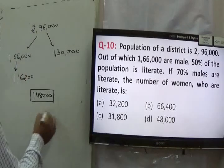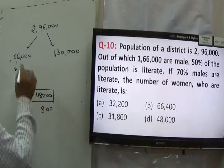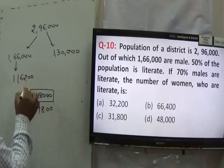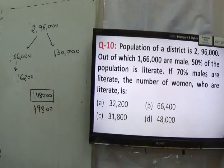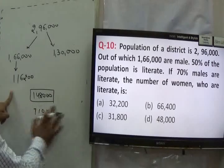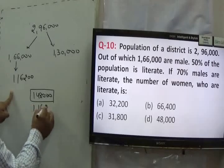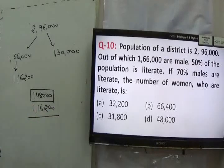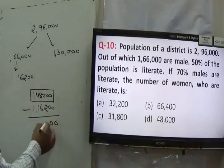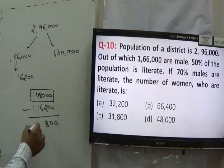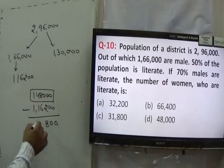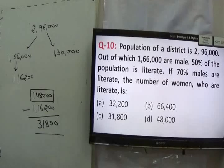Continuing statement 10: 70% of males literate means 1,12,000 males are literate. Total literates are 1,48,000. To find literate females, subtract: 1,48,000 minus 1,12,000 gives us literate females. After the subtraction, the number of women who are literate is 36,000. Wait — recalculating: 70% of 1,60,000 = 1,12,000 literate males. Total literate = 1,48,000. Literate females = 1,48,000 minus 1,12,000. The answer works out and the number of women who are literate comes to approximately 31,800. Answer is C.